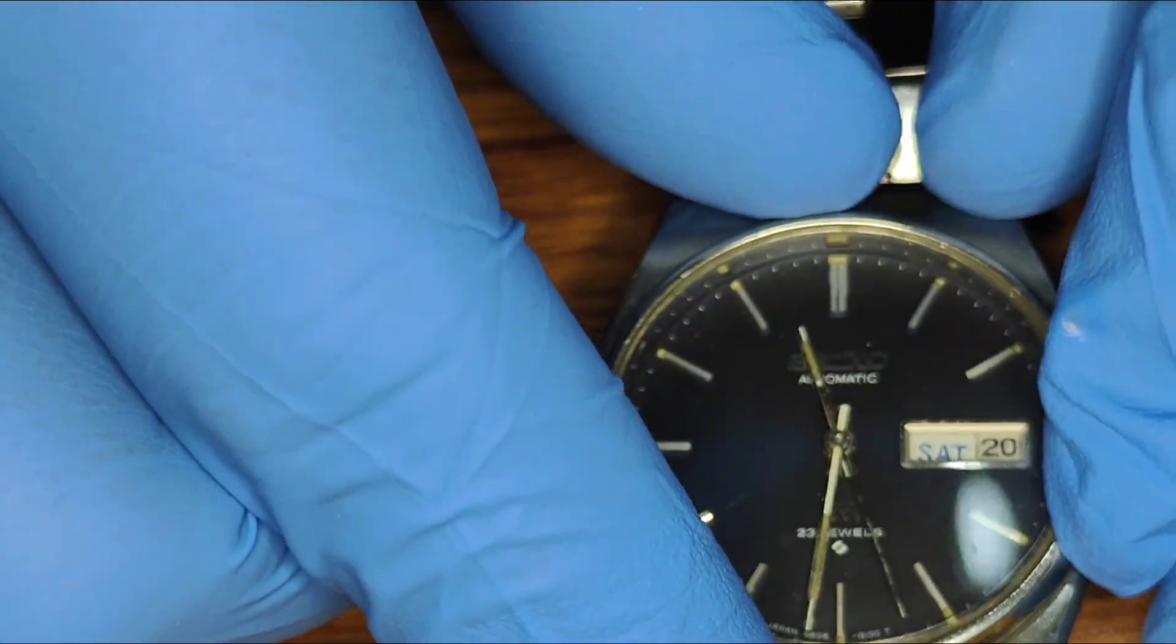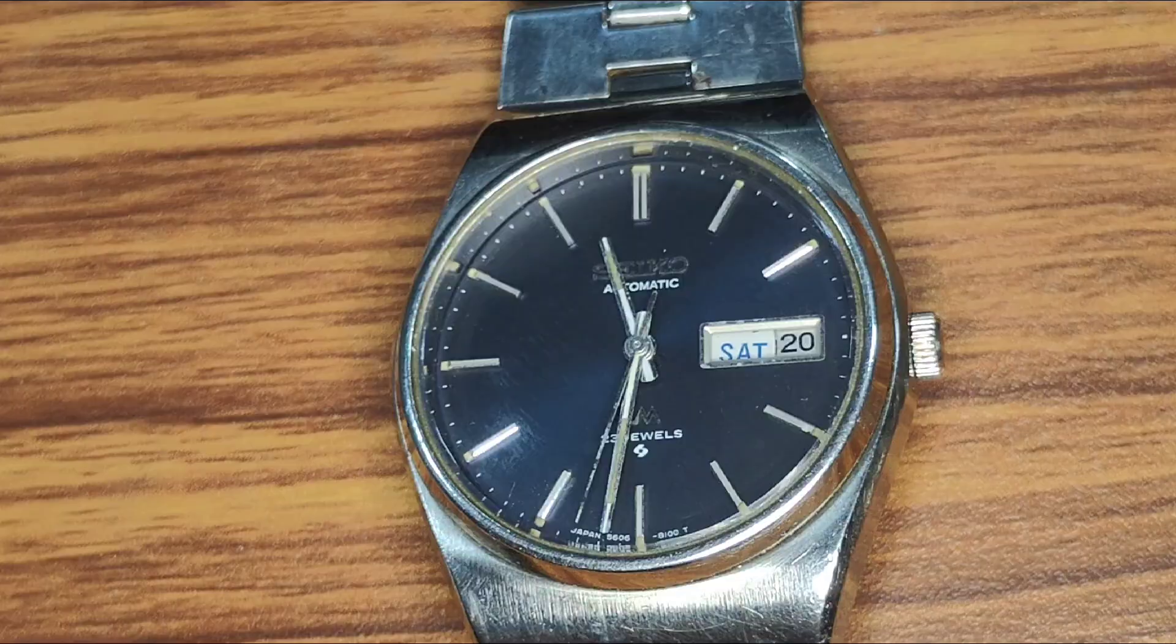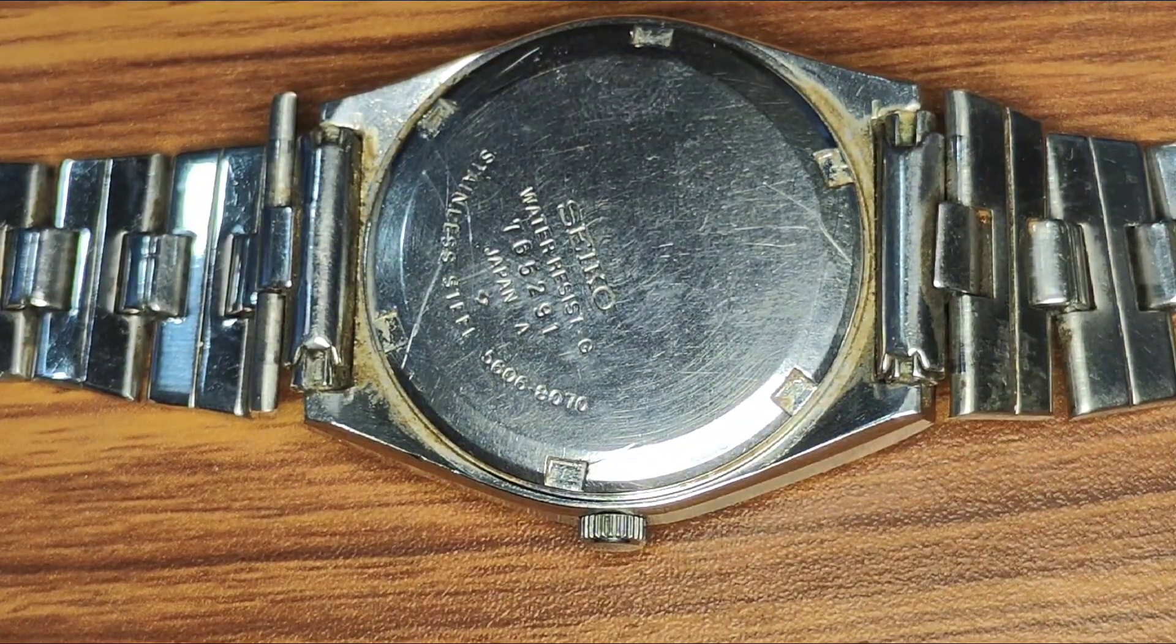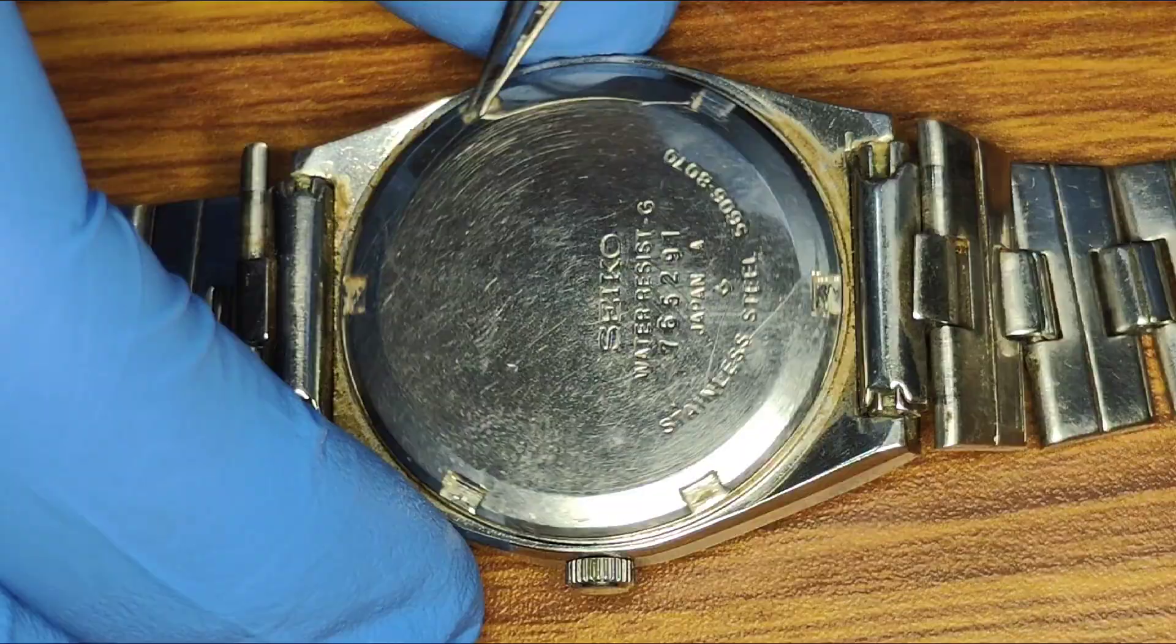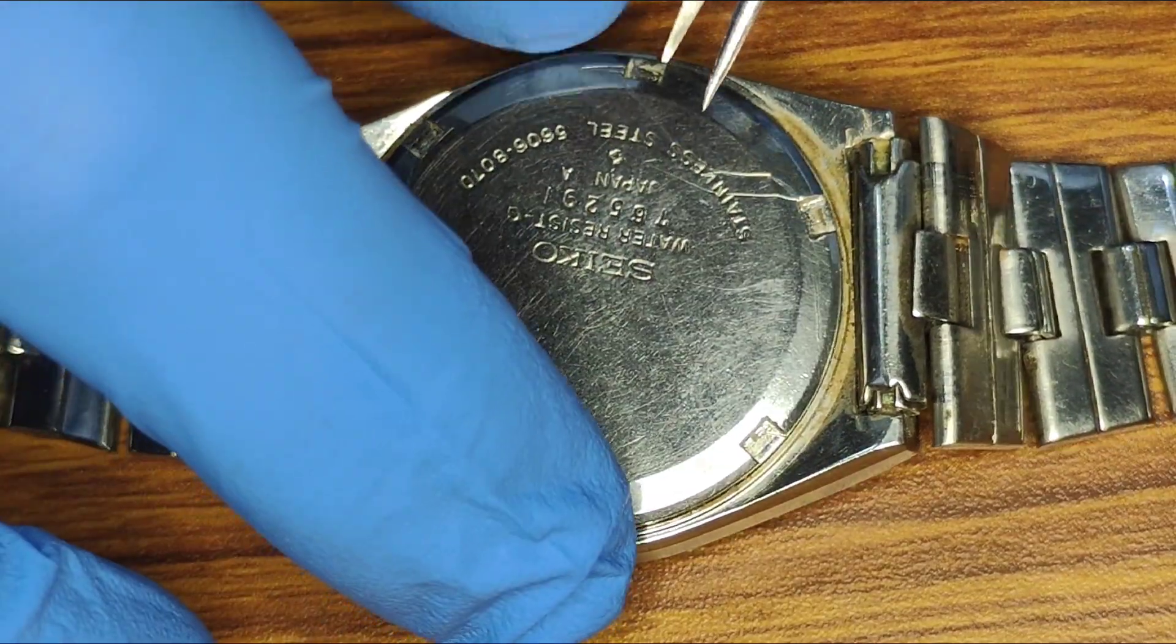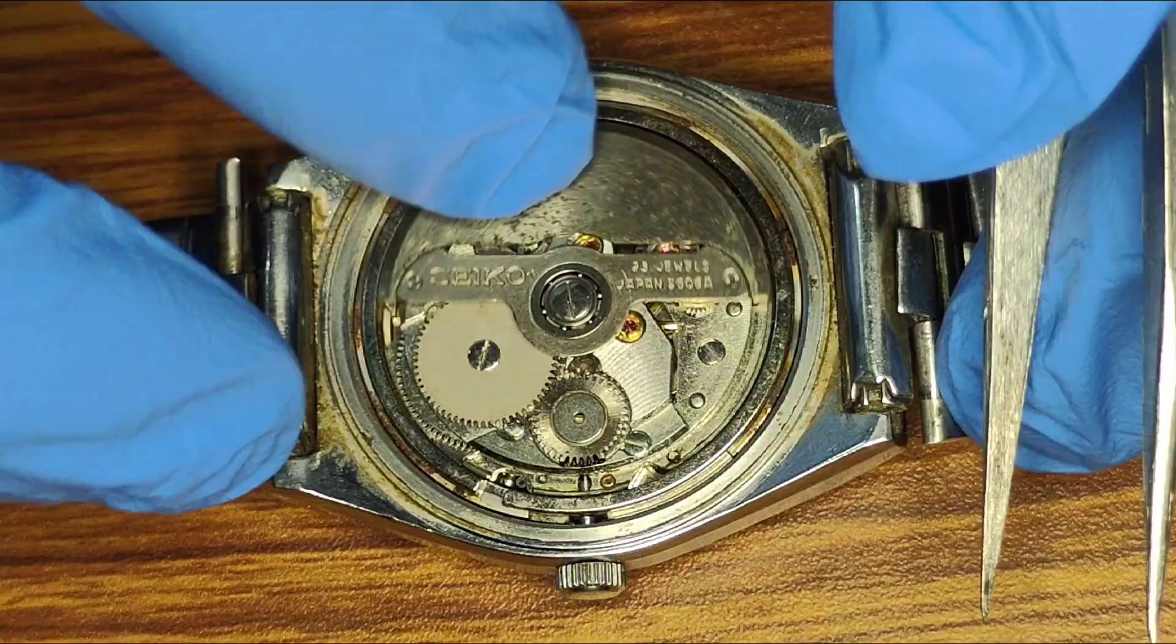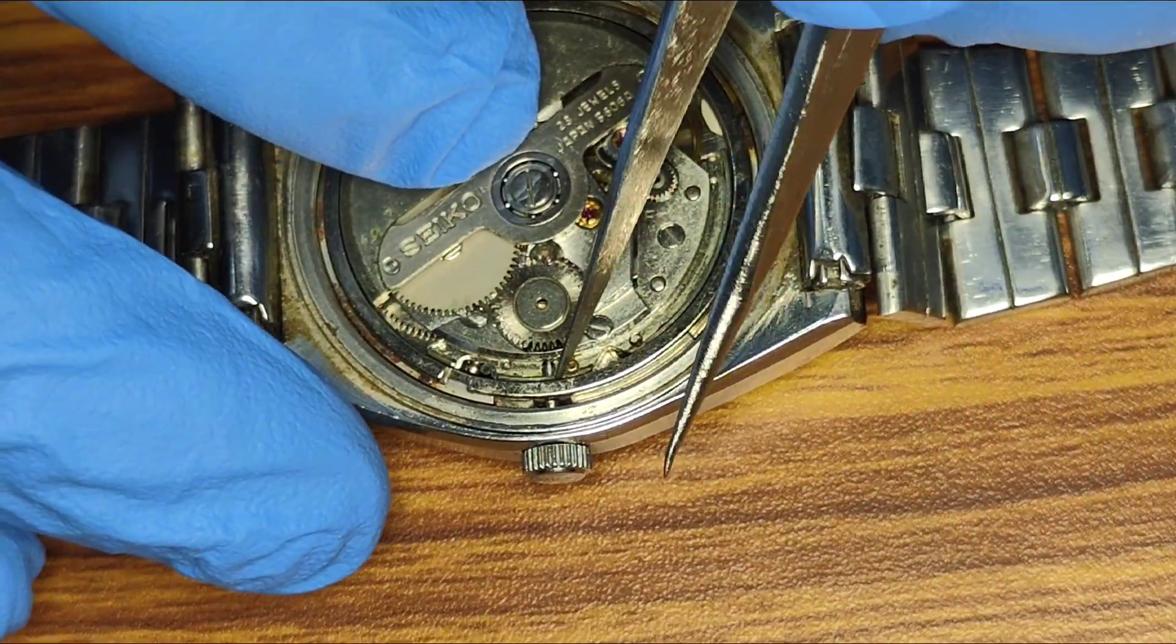Hello guys, welcome back to my channel. Today we will do disassembly of a Seiko Lordmatic watch. This watch has a Seiko 5606A movement. This movement has hacking, 23 jewels, and a bi-directional rotor.